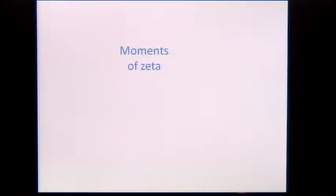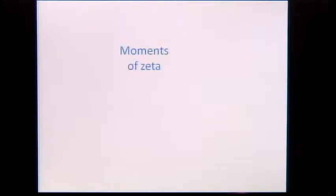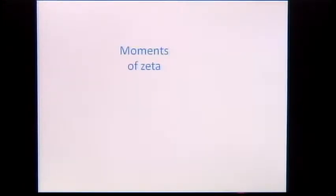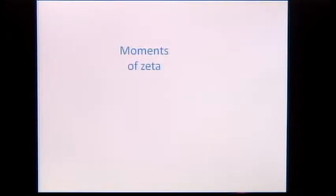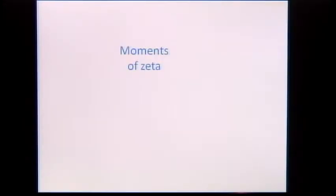There are sort of two kinds of statistics we're looking at: moments and statistics of zeros, which are correlations or level densities. What I want to describe next is how we can give very precise conjectures for any moment or any calculation having to do with zeros in any family.